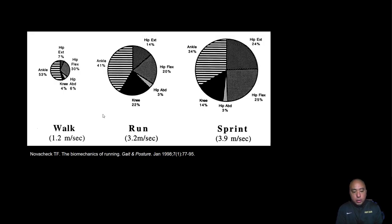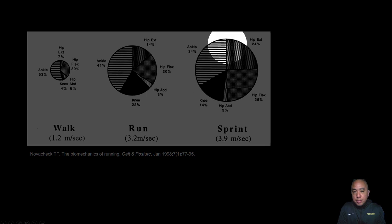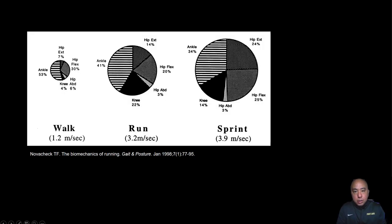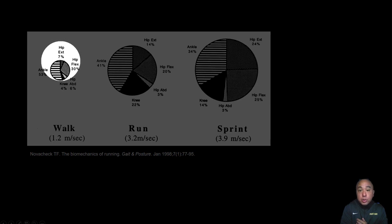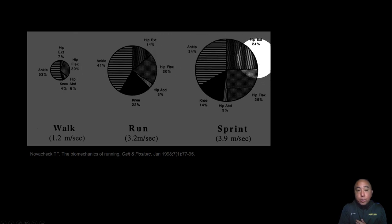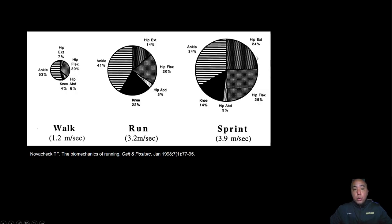Looking at the hip extensors specifically, the role that the gluteus maximus, gluteus minimus, and hamstrings play in propulsion increases as you go from walking to running to sprinting. As running speed increases, contributions of the hip extensors increase from 7% to 14% to 24%. In sprinting, the glutes and hamstrings play a much larger role in propelling the person at a faster rate.